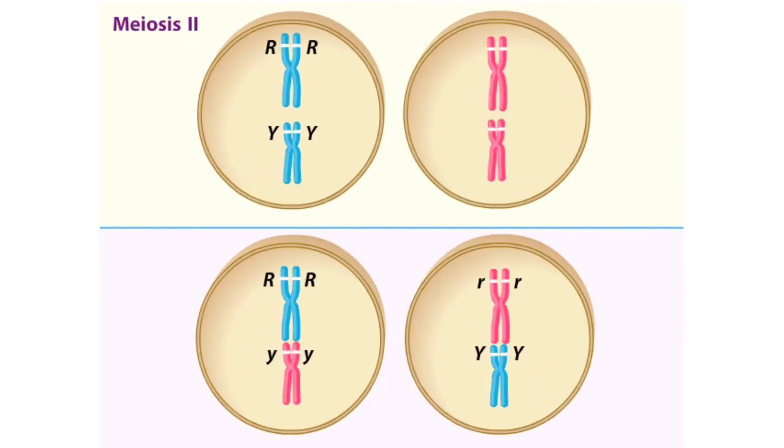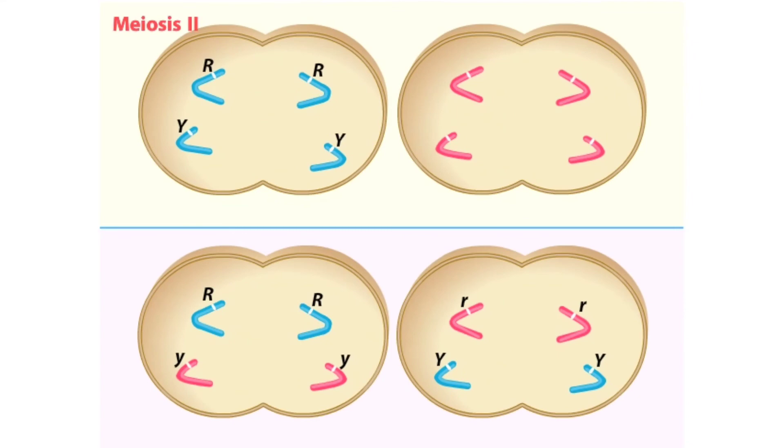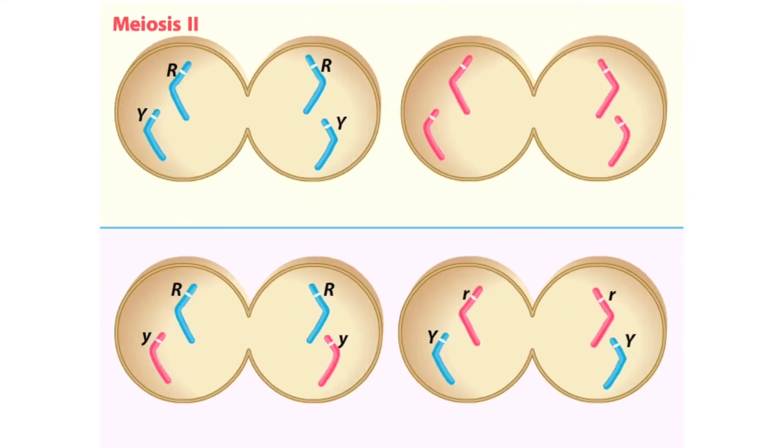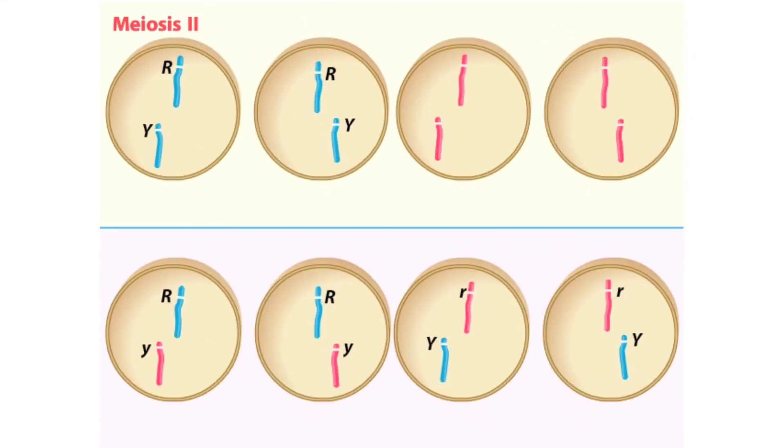In meiosis II, the sister chromatids migrate to opposite poles of the cell. The cells divide, producing four haploid gametes per set. Each original diploid cell produced a different set of gametes, based on the independent assortment of chromosomes in meiosis I.